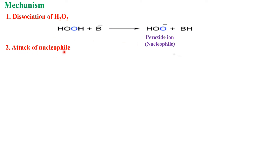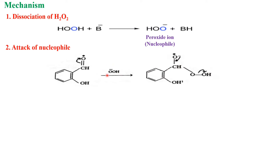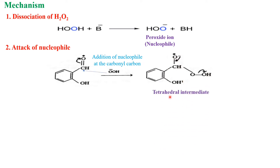The second step is attack of the nucleophile. The peroxide ion is treated with the aryl aldehyde or ketone. During the addition, the peroxide ion attacks the carbonyl carbon of the aryl aldehyde. The double bond between the carbon and oxygen is broken and converted to a single bond, so the peroxide ion is added to the carbon. To satisfy the valency of oxygen, a negative charge is placed there. This is called the tetrahedral intermediate.